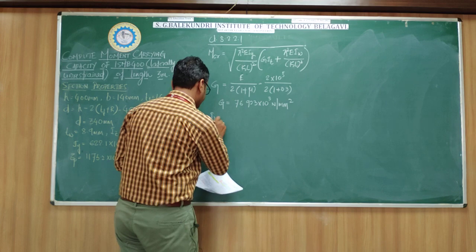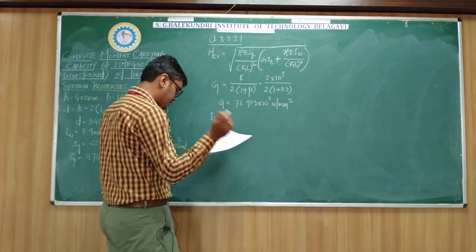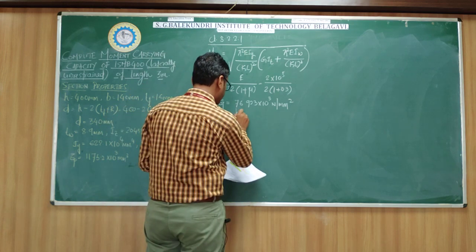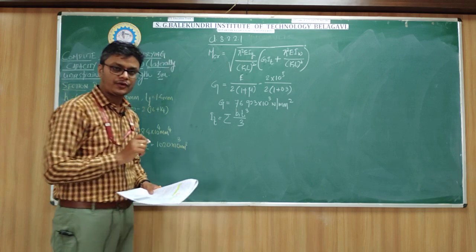IT is the torsional constant. The formula for this is given in the steel table. IT = Σ(BT³/3), where B is the width and T is the thickness.